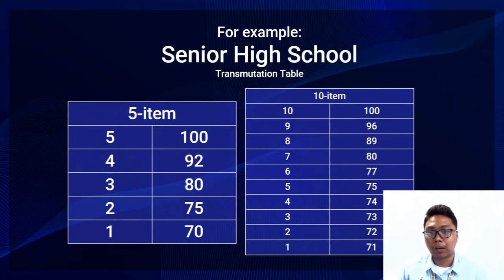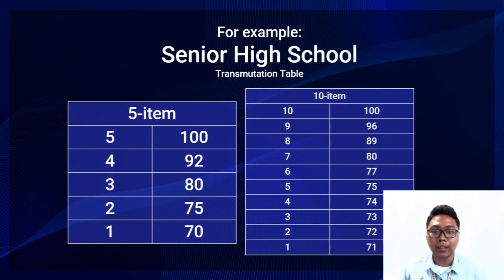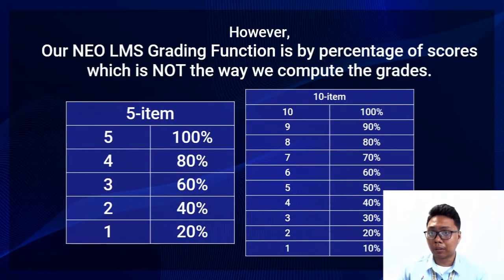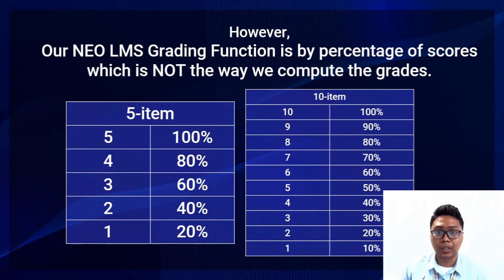For a 5-item test, you get 5 for 100, 4 is 92, 3 is 80, followed by the 10-item test. However, in NeoLMS, the grading function is by percentage of scores, which is not the way we compute the grades.